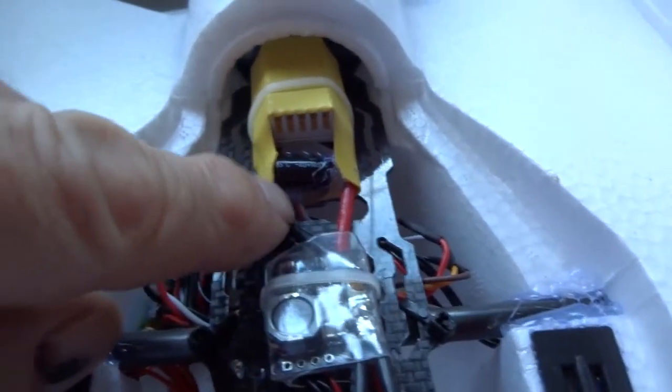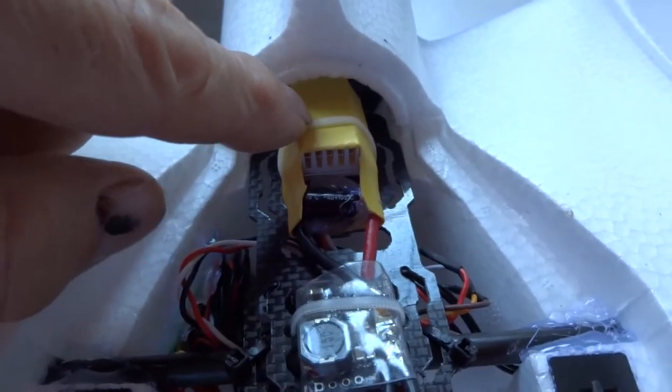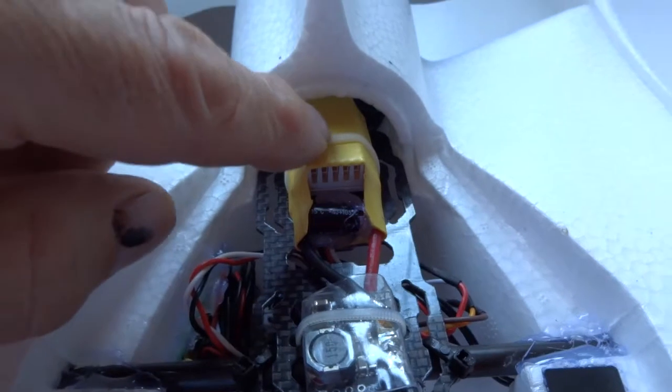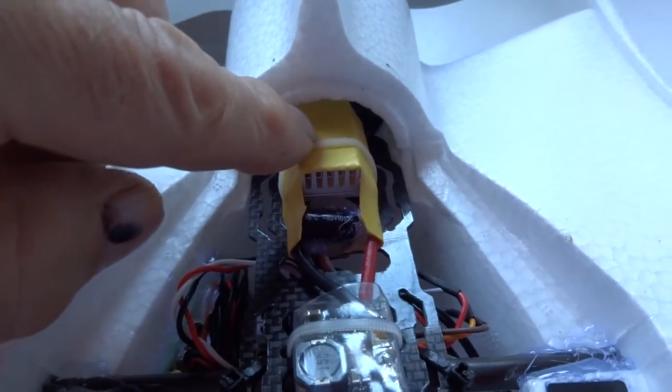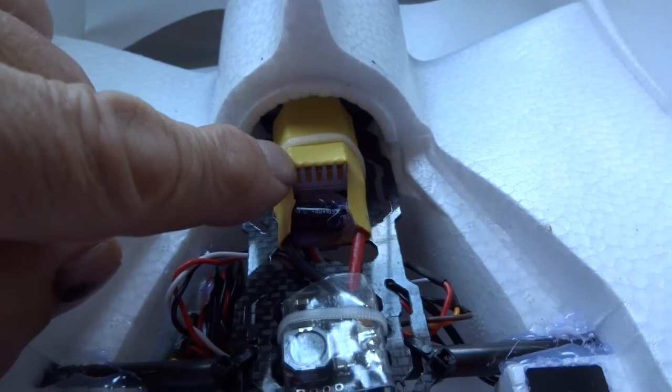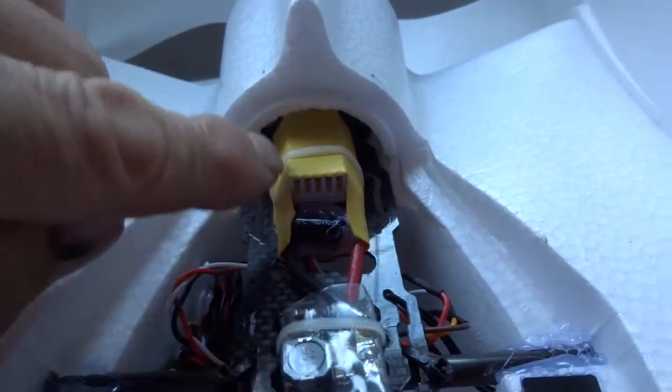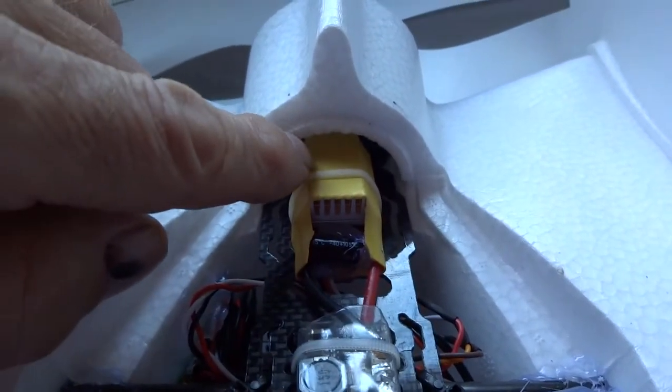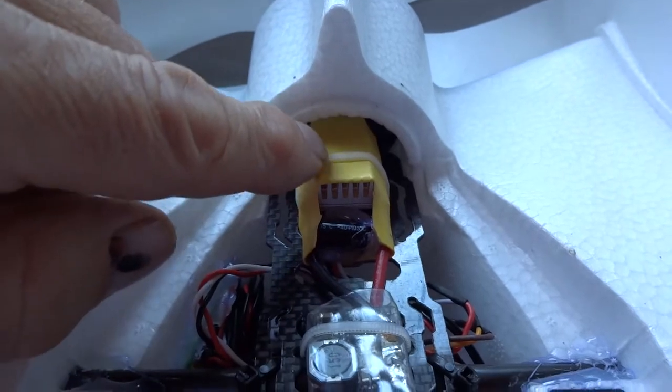Then the power from there goes to a 30 amp ESC. It's got an extra fin heat sink in there, so you've got a good flow of air through there, and that doesn't get warm at all.